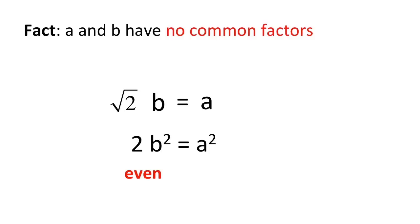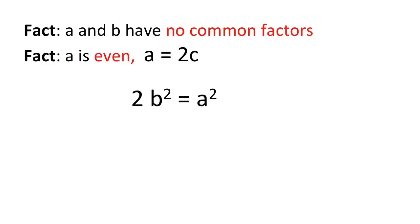Since the left side is even, the right side must also be even, making a an even number. This means a equals 2c for some integer c. Substituting this in and simplifying produces b squared equals 2c squared.